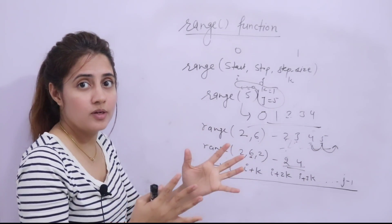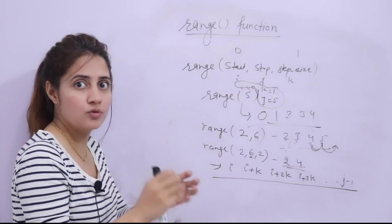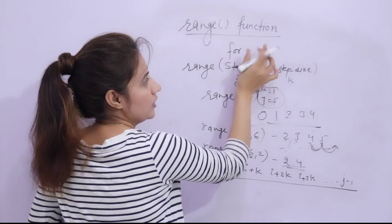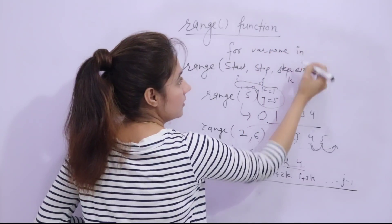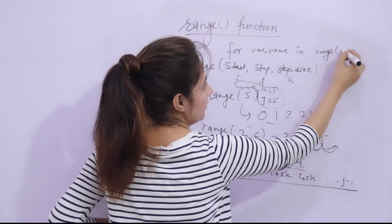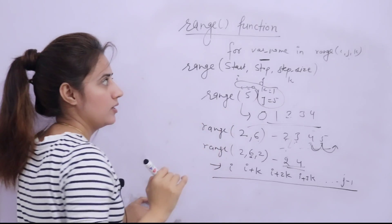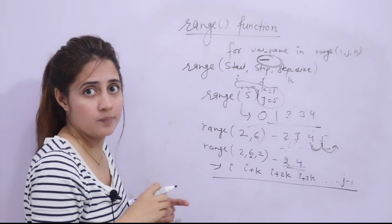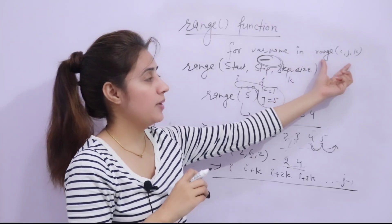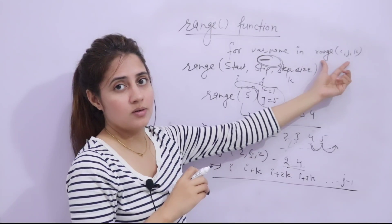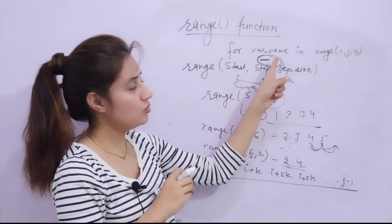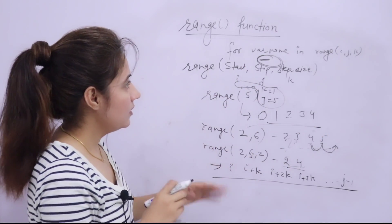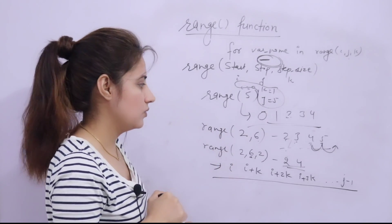We can also use this range function with a for loop. If you want to loop through a block of code for a specific number of times, you can use range here. The syntax is: for variable_name in range(i, j, k), then write the statements you want to execute. The code will be executed as many times as the range function produces numbers. We will see a coding exercise on this in the next video.